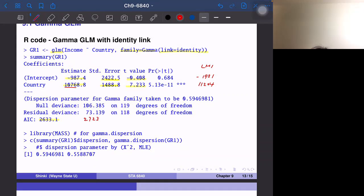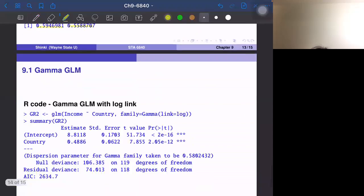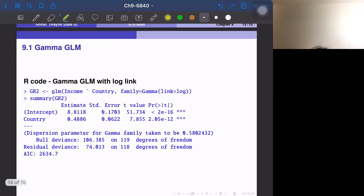And the dispersion parameter, dispersion parameter is φ. We have two ways. One way is we use chi-square statistic and divide by N minus P. And the other way is the maximum likelihood estimator. And these two are similar and φ is around 0.5 something.